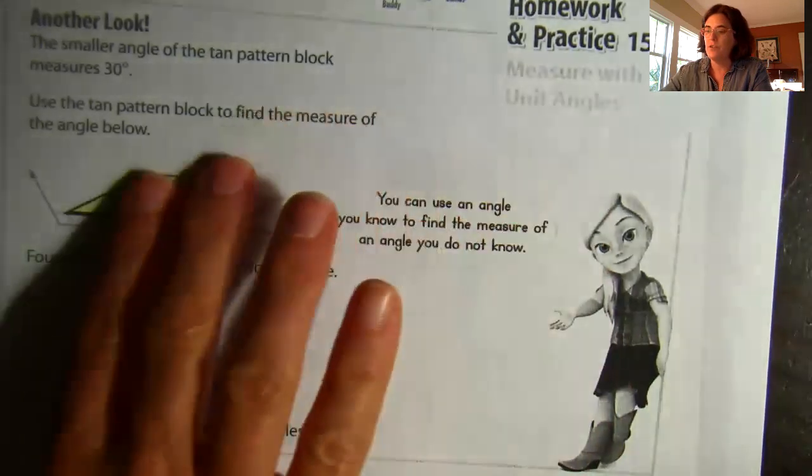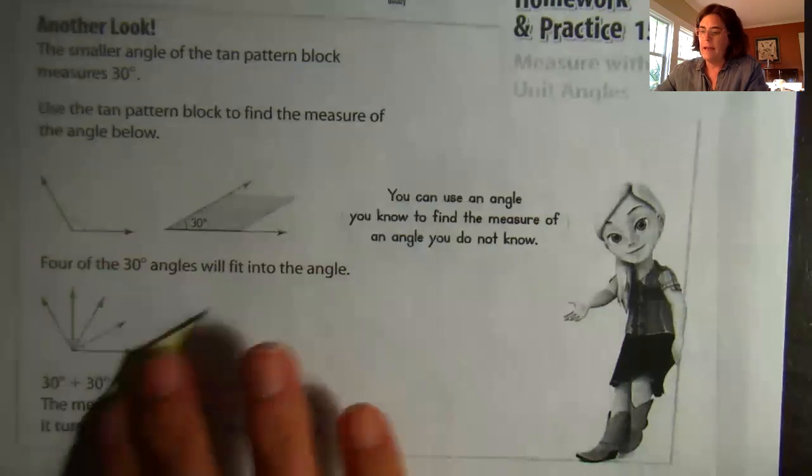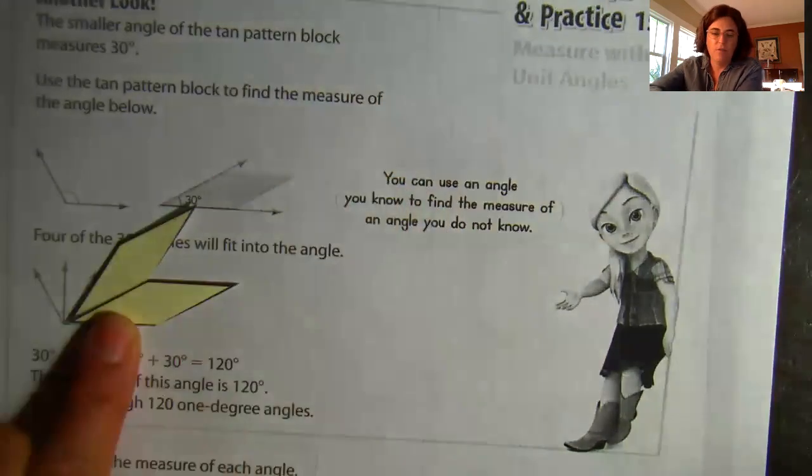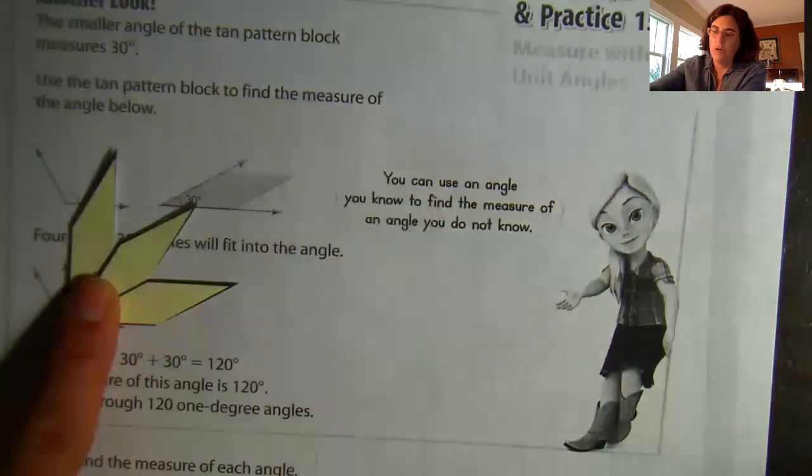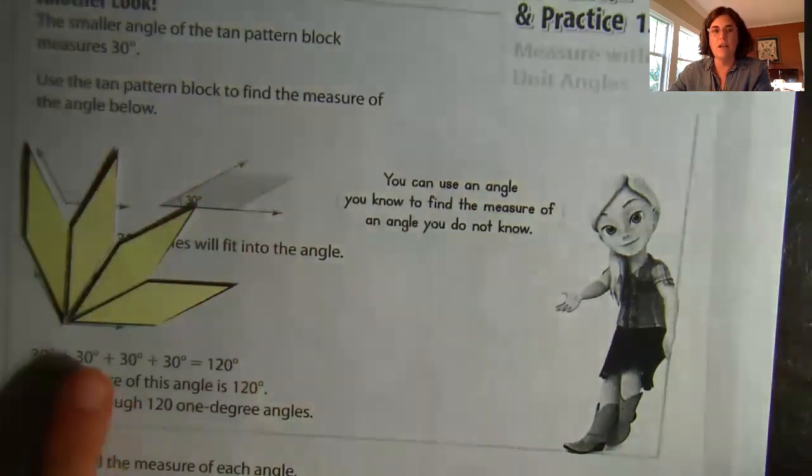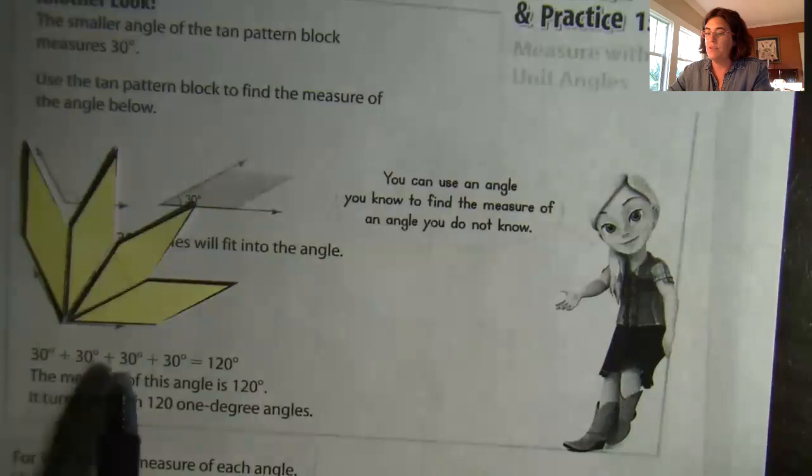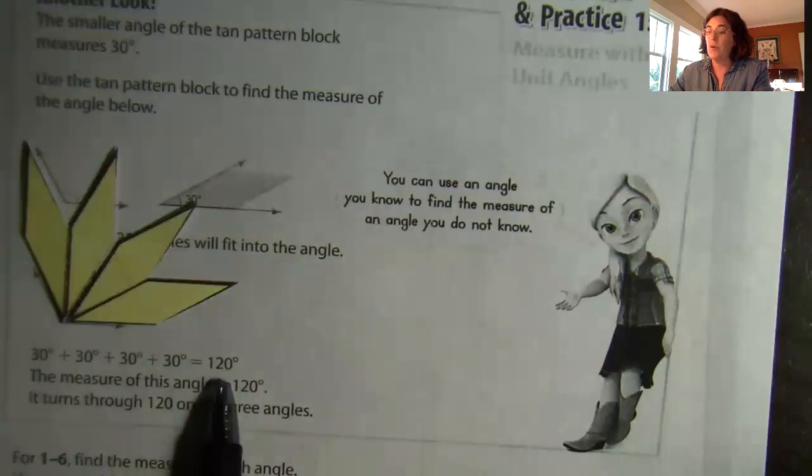So what I'm going to have to do is I'm going to have to add more than one tan pattern block to equal that entire angle. So I have 1, 2, 3, and 4. So now I see I have filled in that entire angle with pattern blocks and I can use my knowledge of adding to go ahead and figure that out. So I know that I can add 30 plus 30 plus 30 plus 30 and get the total angle, and it equals 120 degrees. So even though we didn't have a pattern block that exactly fit, we could put these angles together and add them to find the measurement of the angle we don't know.